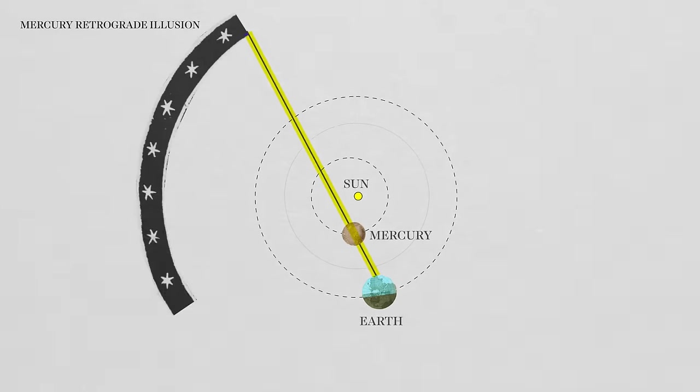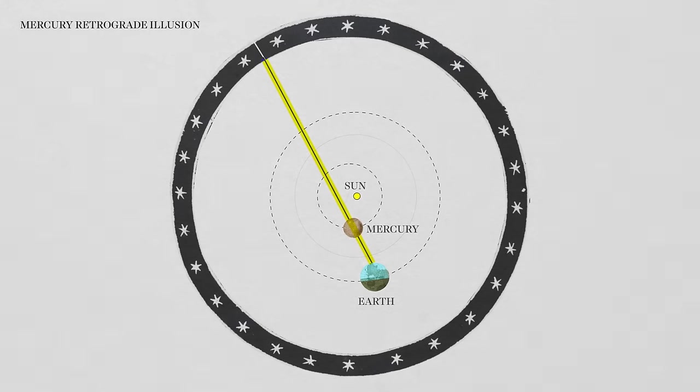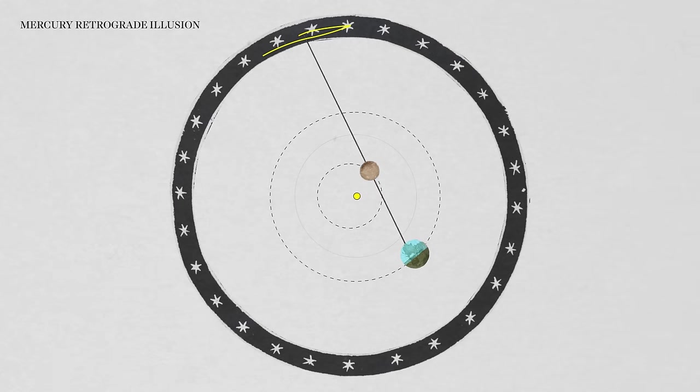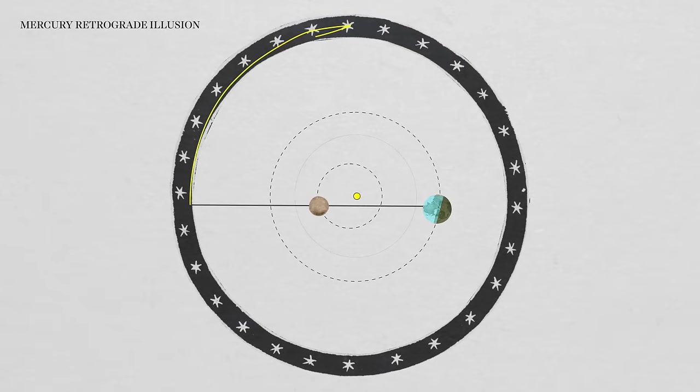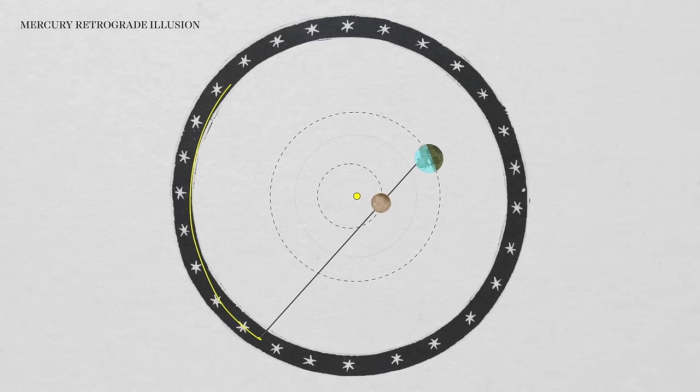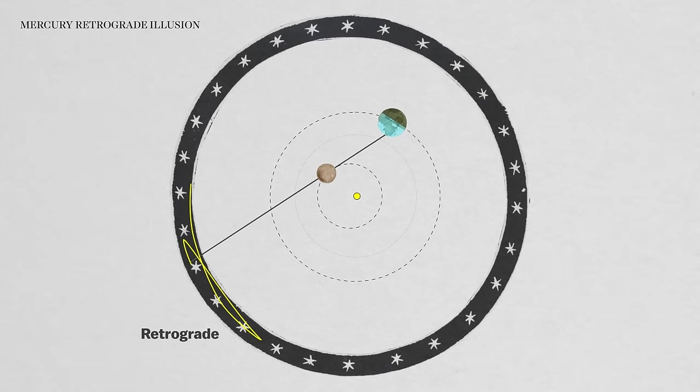This line shows our view of Mercury against the background stars. As Mercury passes us by, our line of sight shifts so that for about three weeks, Mercury will appear to loop back on itself when viewed from Earth.